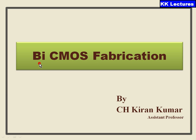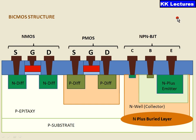As the name says, BiCMOS stands for complementary metal oxide semiconductor. Bi means 2, or bipolar. Complementary metal oxide semiconductor means it contains both NMOS as well as PMOS. If you see the structure of your BiCMOS, it is having one NMOS, one PMOS, and one NPN-BJT, that is bipolar junction transistor.